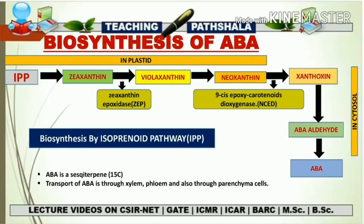Abscisic acid is a 15-carbon compound, which is why it is sometimes known as a sesquiterpene. The 15-carbon compound is also known as farnesyl diphosphate, abbreviated FPP. So ABA is regarded as a sesquiterpene as well as farnesyl diphosphate. The biosynthesis of ABA from xanthoxin through ABA aldehyde to ABA all takes place in the cytosol.